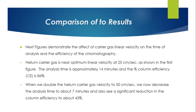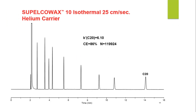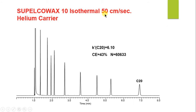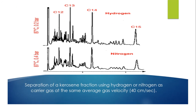When the helium carrier gas velocity is doubled to 50 cm/sec, the analysis time decreases to about 7 minutes, but there is a significant reduction in column efficiency to about 43%. A separation of a kerosene fraction using hydrogen or nitrogen as carrier gas at the same average gas velocity of 40 cm/sec is also shown.